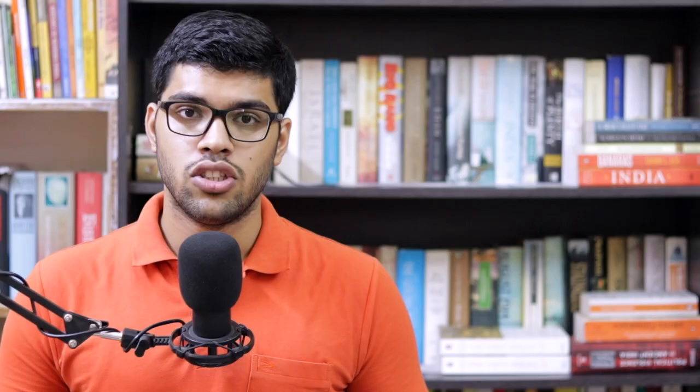In order to understand how the Nanda Empire came into existence, we have to first go back to the period after the death of Ajatashatru. As discussed in previous videos, Ajatashatru had made Magadha the preeminent power in eastern India, but was ultimately killed by his own son. Udayin, who became king after killing his father Ajatashatru, was also killed by his son. The frequent assassination of Magadhan kings had made Magadha internally very weak.